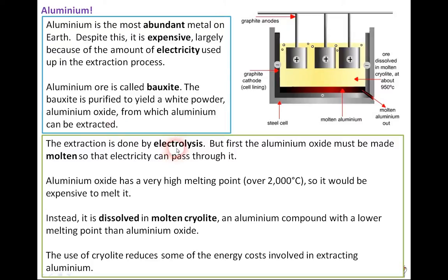Now the extraction is done by electrolysis, which we've talked about previously. But first aluminium oxide must be made molten, so that the electricity can pass through it. So this is the molten method. Now, the melting point of aluminium oxide is very high, over 2000 degrees C. So to melt it using electricity, and that's what they normally do, large amounts of electricity pass through it and get it very hot, it will be very expensive to melt it.